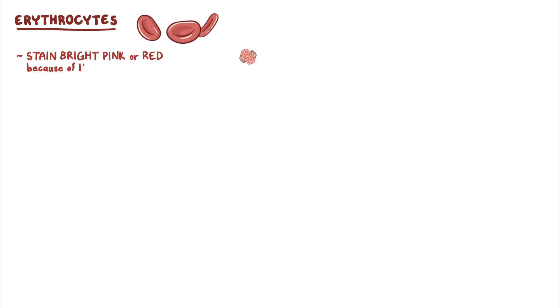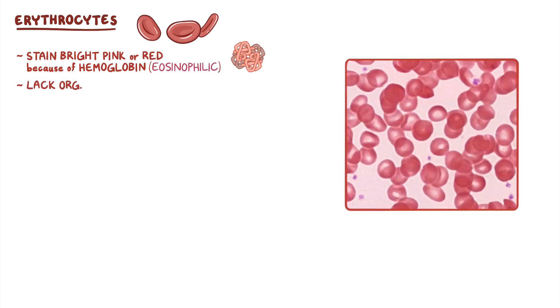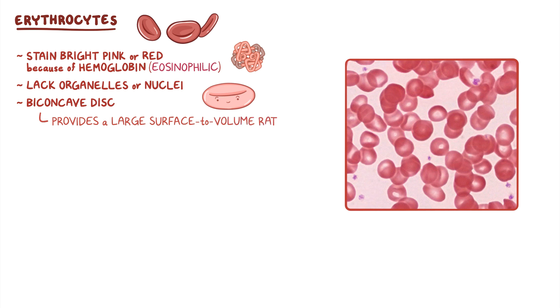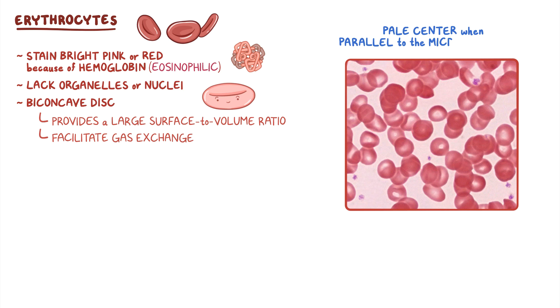Now, let's take a closer look at the erythrocytes. With Wright stain, the erythrocytes stain bright pink or red because they contain a large amount of hemoglobin, which is eosinophilic. Erythrocytes normally lack organelles or nuclei, and they're typically shaped like a biconcave disc, which provides a large surface-to-volume ratio that helps facilitate gas exchange. As a result, the center of erythrocytes are thinner, which is why they appear to have a pale center when positioned parallel to the microscope slide. Erythrocytes normally survive in the circulation for about 120 days.